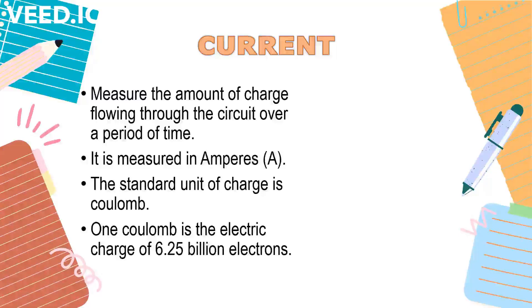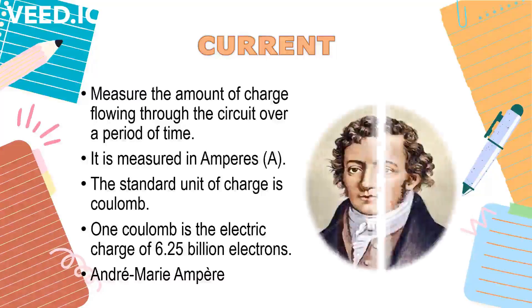One coulomb is the electric charge of 6.25 billion electrons. The unit ampere represented by capital letter A is named after André-Marie Ampere, a French physicist who made important contributions about the connection of electricity and magnetism.